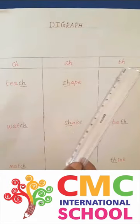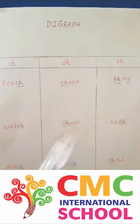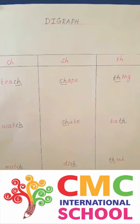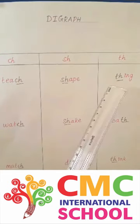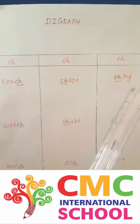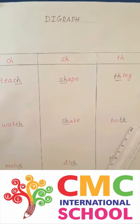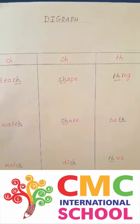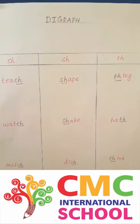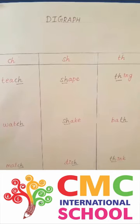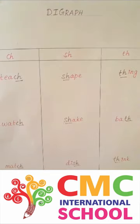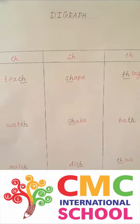Letters T and H make the sound TH. For example: thing, thank.